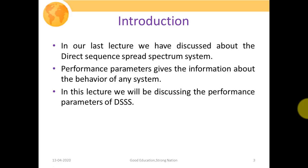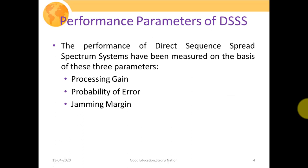In our last lecture, we discussed direct sequence spread spectrum systems — how to generate a direct sequence spread spectrum signal with the help of a PN sequence generator, and several applications of these systems. Performance parameters give information about the behavior of any system — how a particular system behaves, whether it is performing up to the mark or lagging. In this lecture, performance is measured on the basis of three parameters: processing gain, probability of error, and jamming margin.